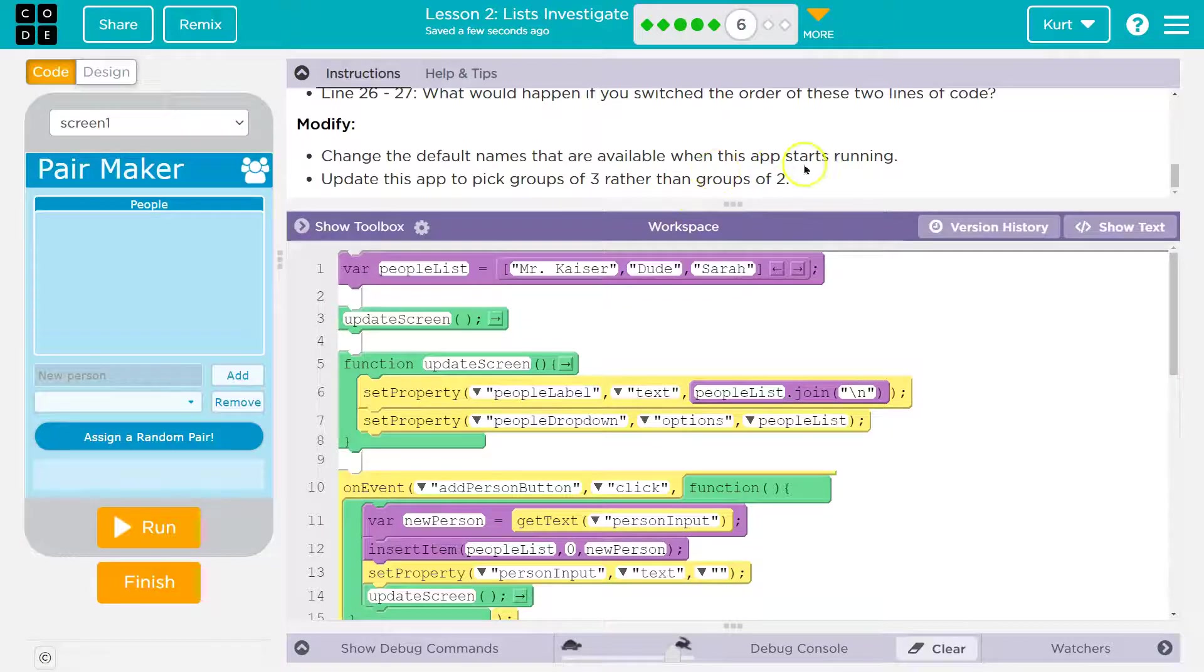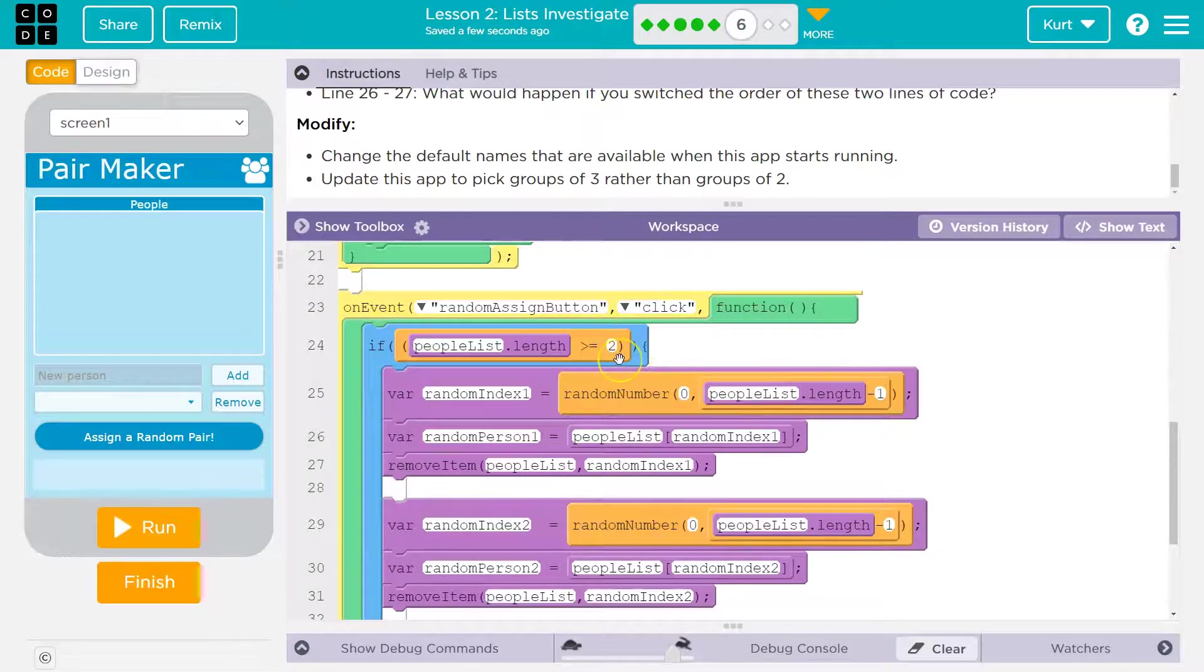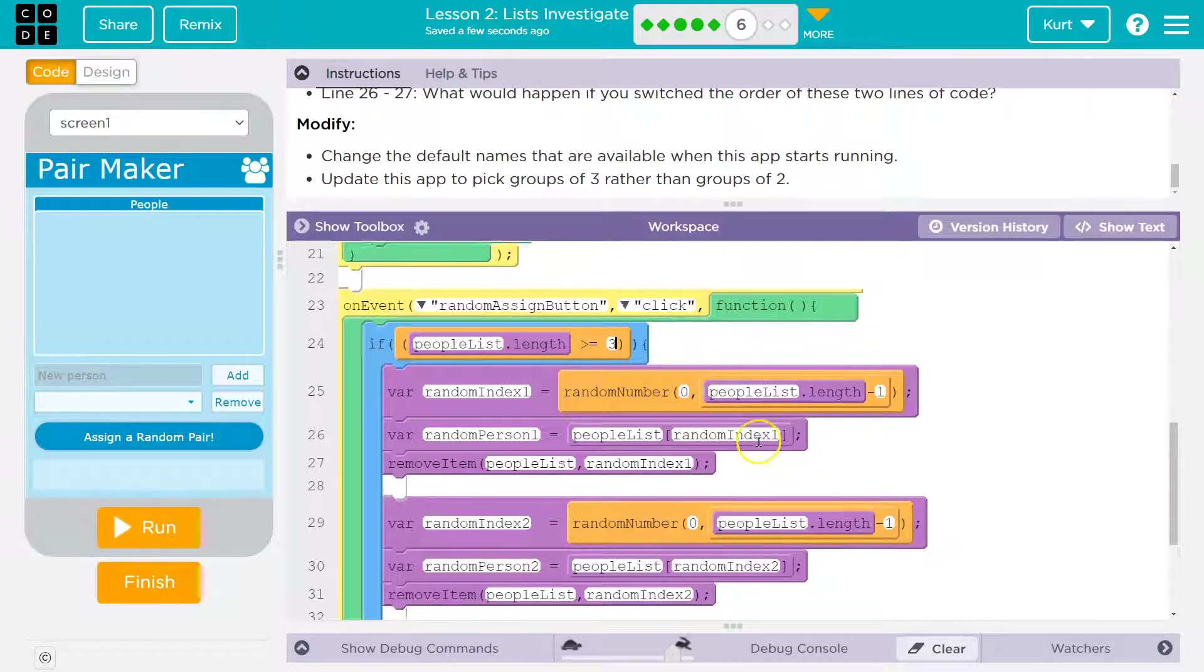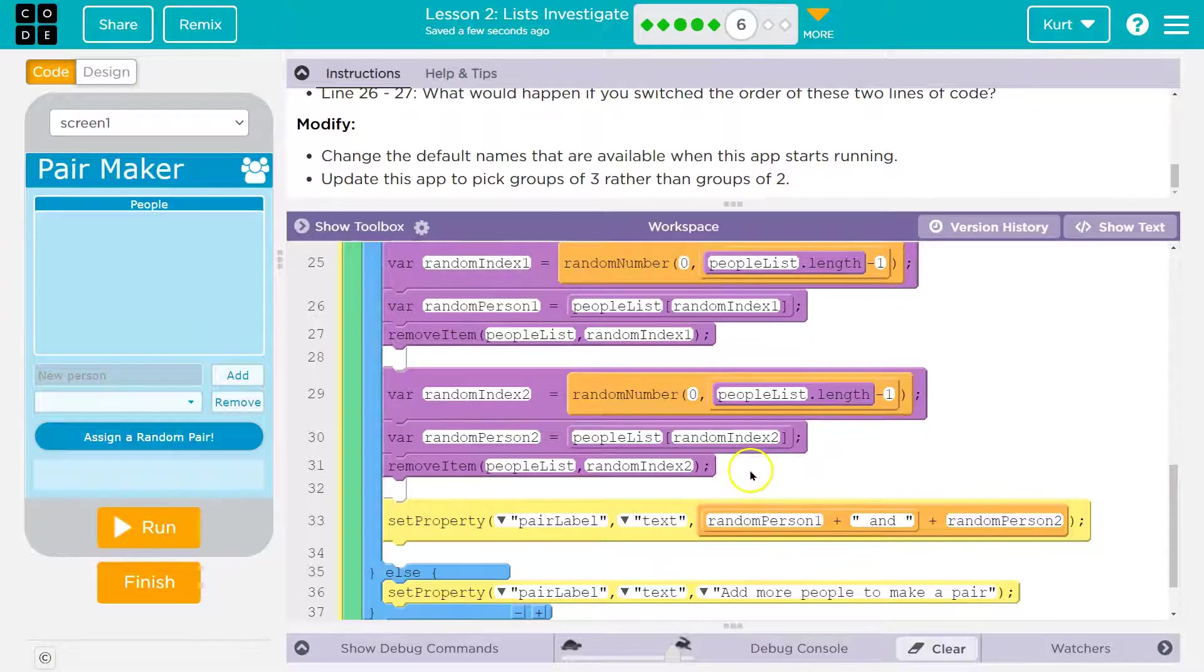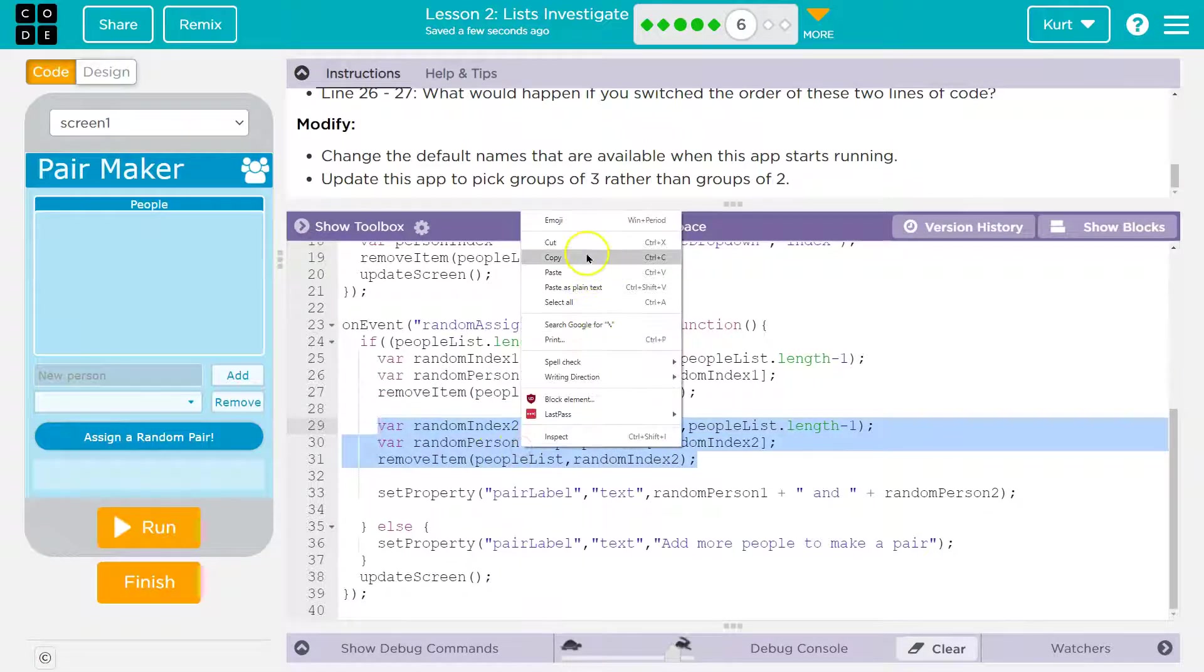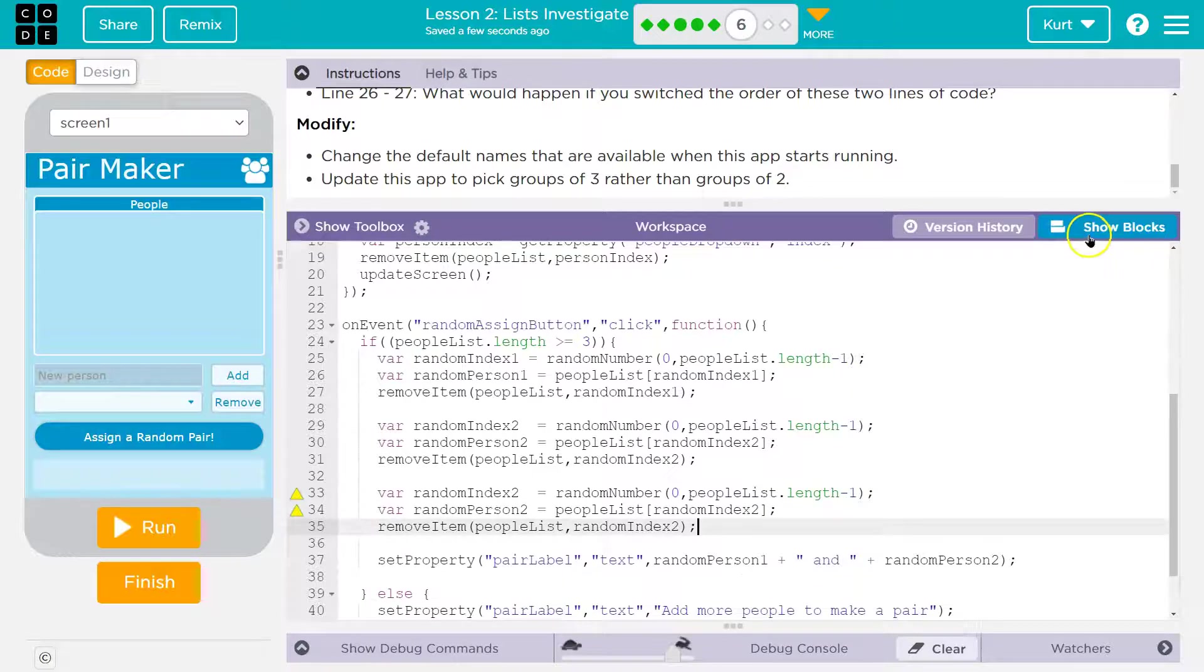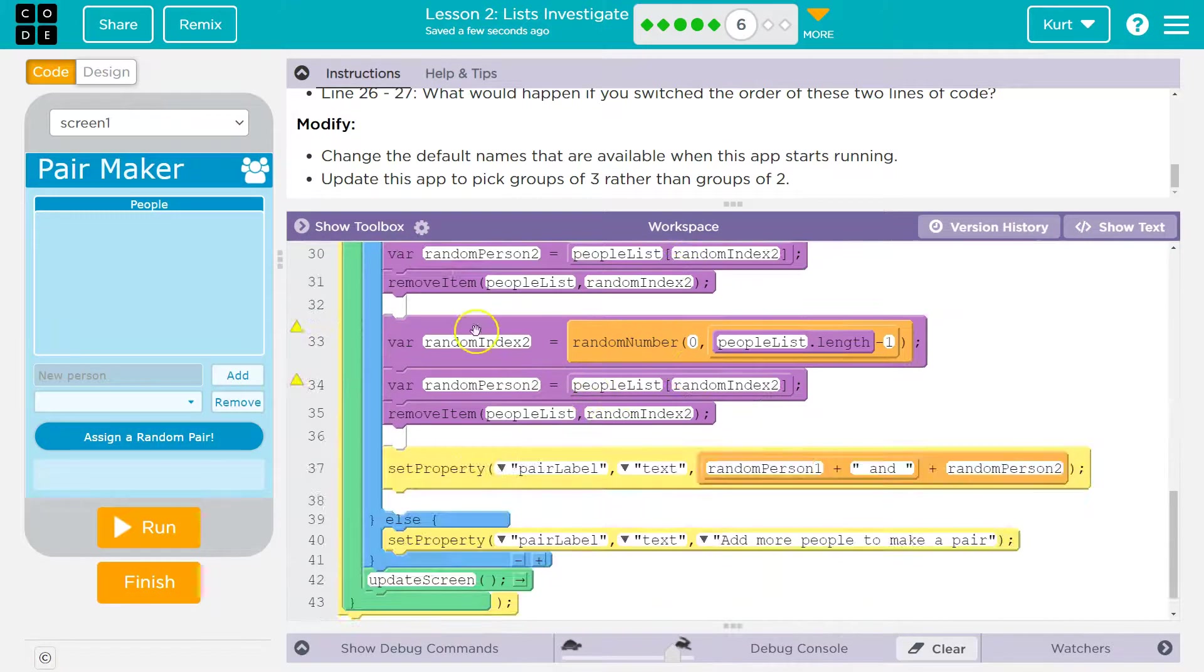Update the app to pick groups of three rather than groups of two. All right. Groups of three. So I'm going to first go down here and take a look. We want to make sure that we have three people available. So we need the length to be greater than three. We then need random index one, random index two, and random index three. So I'm going to go into text mode because it's going to be pretty similar to this. So I'm going to highlight all of that code and do right click copy.